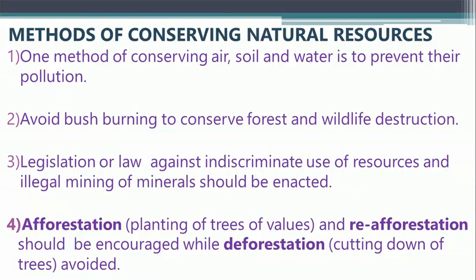Number three: legislation or laws against the indiscriminate use of resources and illegal mining of minerals should be enacted. Laws can check people from using resources indiscriminately, and also check miners from mining illegally. Number four: afforestation and reafforestation should be encouraged, while deforestation should be avoided. Afforestation means planting trees on bare land, while reafforestation means replacing cut-down plants by planting new ones.